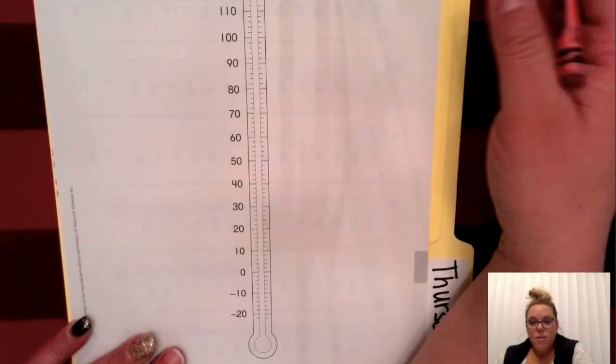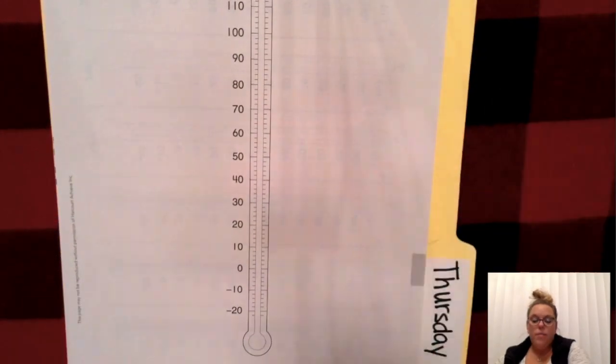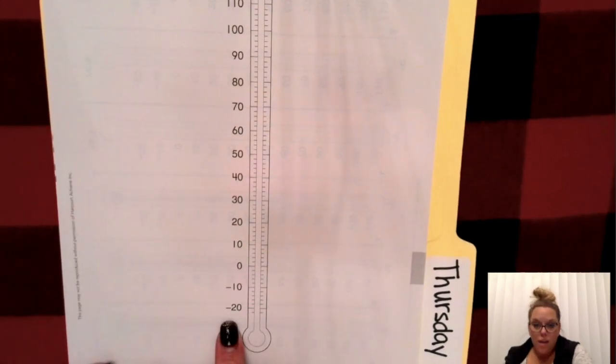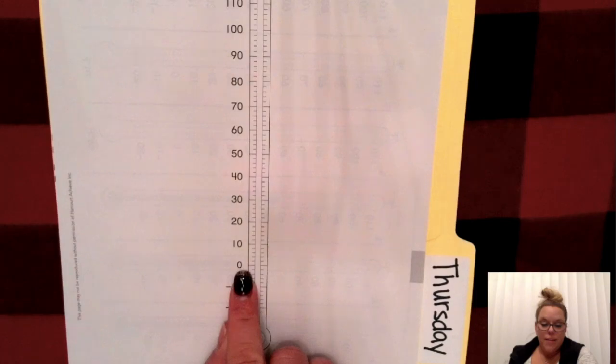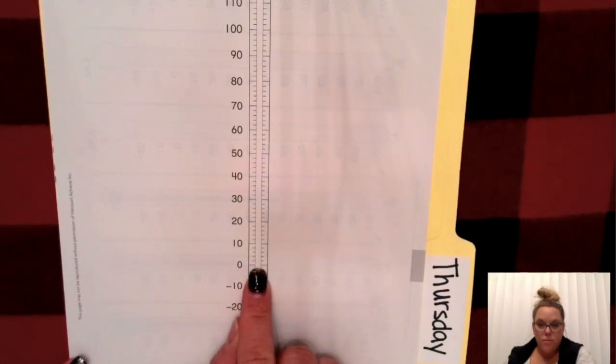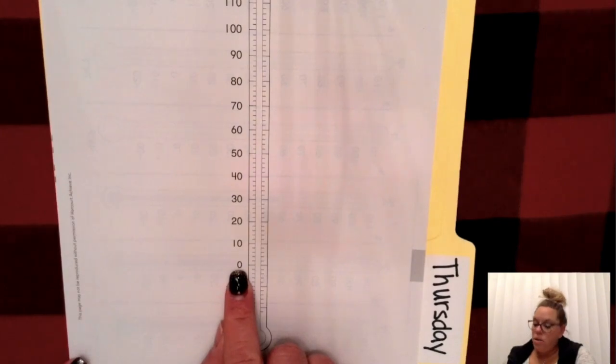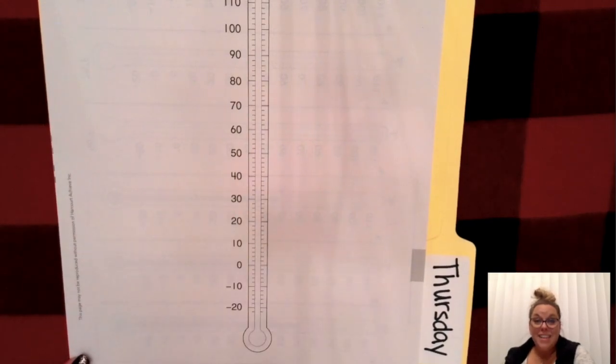As you can see on your sheet that you need to have in front of you, this is what a Fahrenheit thermometer is going to look like between negative 20 degrees and 110 degrees. I would like you to go ahead and point to the line at zero. Here's zero degrees right here. Go ahead and point to 30 degrees and how about 70 degrees.